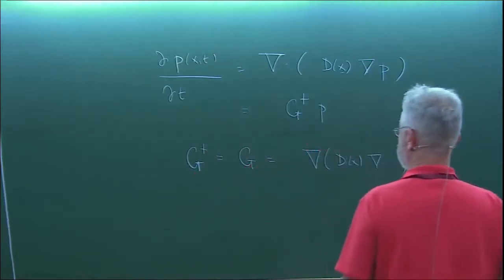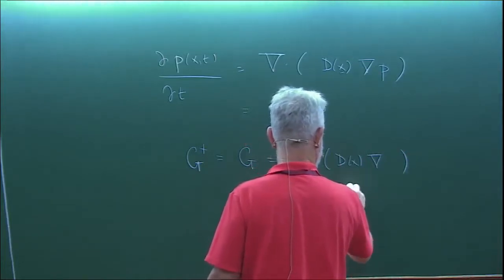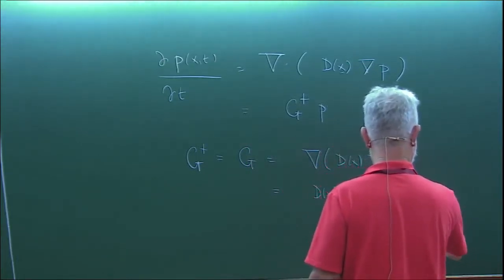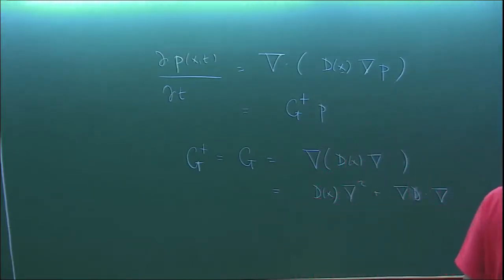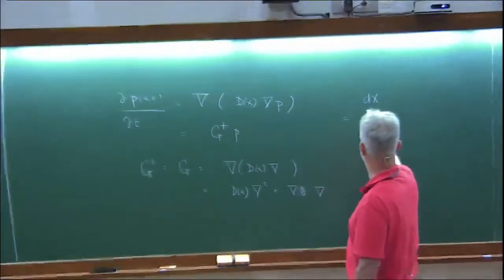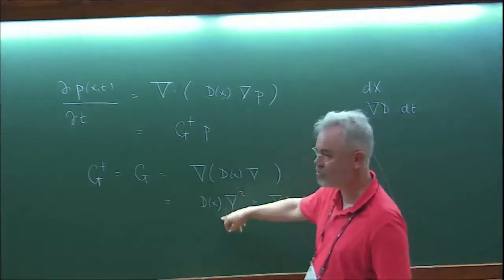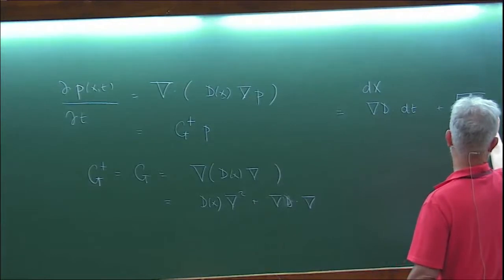This means I can write the generator as d(x) times del-squared plus grad(d) dot grad. I can immediately write down the stochastic differential equation for the process described by this Fokker-Planck equation: dx(t) equals grad(d) times dt plus the square root of 2d(x) times dB(t).